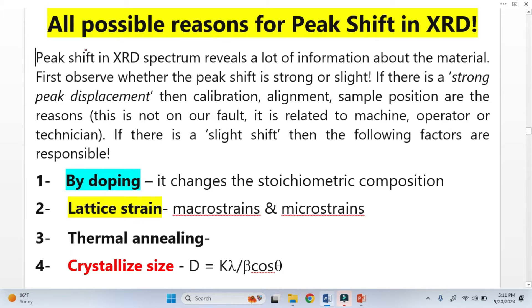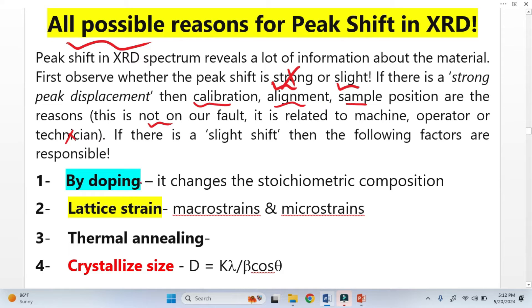There are two types of peak shifts: one is a strong peak shift and another is a slight peak shift. If there is a strong peak shift, those reasons are something else — for example, calibration, alignment, or simple displacement in the machines. That is basically the operator or technician's concern. But when there is a slight displacement of the peak from original positions, these are the four factors which cause the peak shifts.